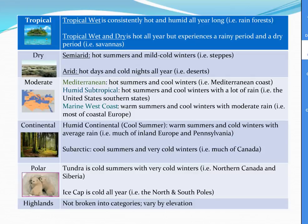In the dry category, you can have semi-arid or arid microclimates. Semi-arid regions have hot summers and mild, cold winters. In arid regions there are hot days and cold nights all year around — you'll see this in deserts.